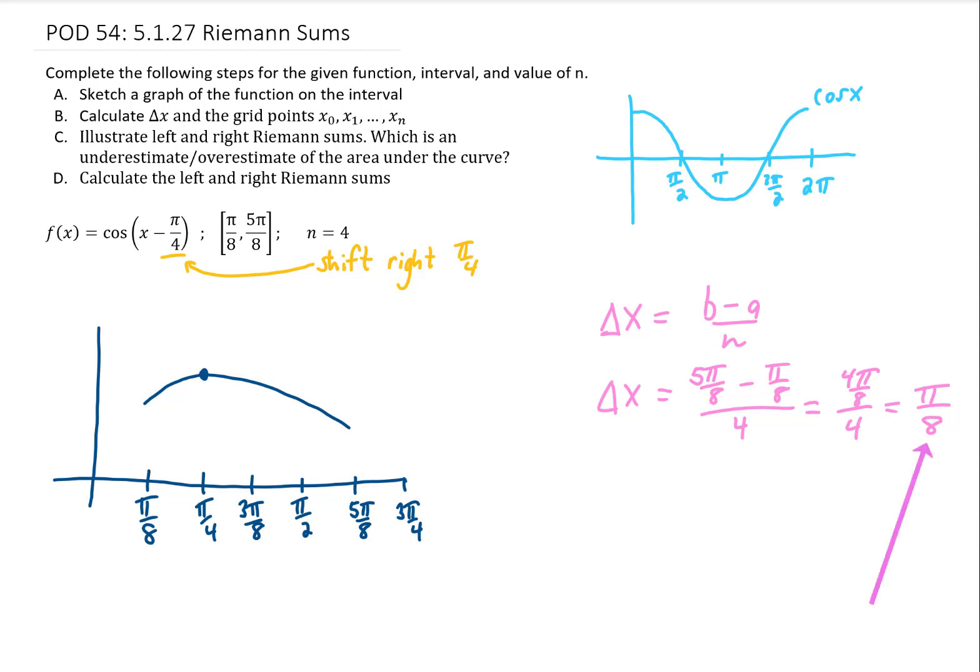What that means is that the width of each one of our rectangles in this Riemann sum is going to be pi over 8. And that's really convenient for us, because if you look at the sketch that we made of this graph, we've already divided this thing up into four equal increments, each with length pi over 8. All right, so we're all set up to illustrate what a left Riemann sum would look like.